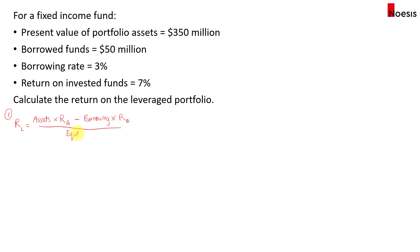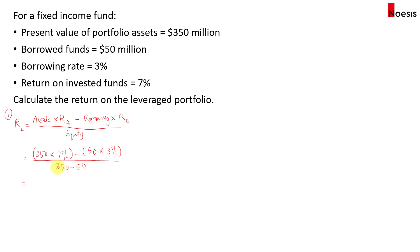The portfolio equity is based on the amount of assets minus the borrowing amount. So the amount of assets, $350 million, multiplied by the return of 7%, then minus the borrowing amount of $50 million multiplied by the borrowing cost of 3%. The equity amount, which is the amount contributed by the fund itself, is $350 minus $50, that's $300 million. If we calculate this, we get about 7.67% return, which is higher than the return on the invested funds.